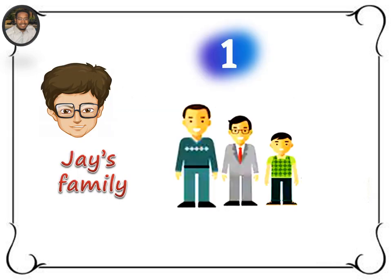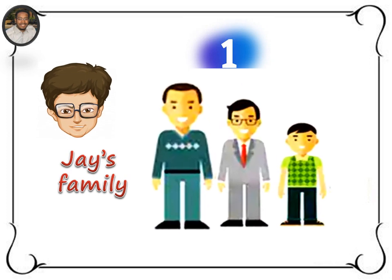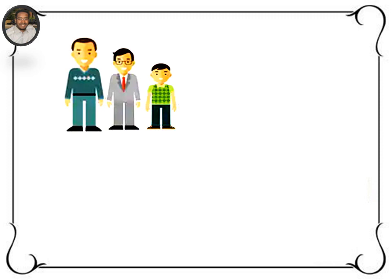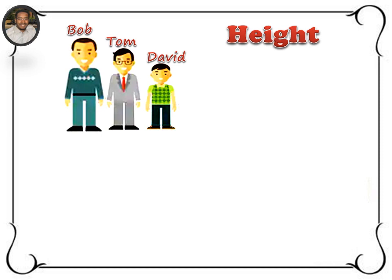This is Jay and these are some of his family members. They are Bob, Tom and David, and they're all different. But what makes them different? Yes, height. Height.